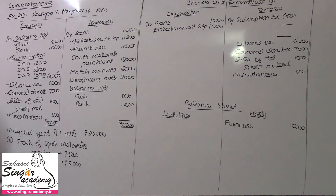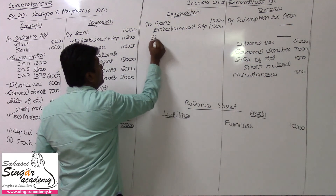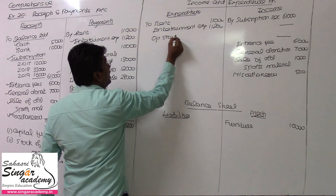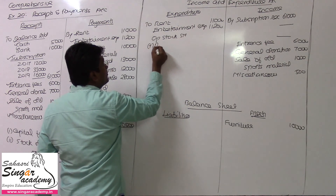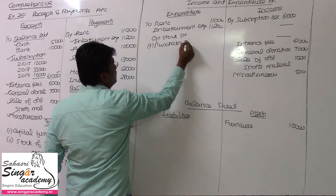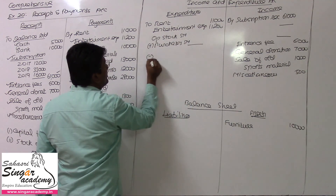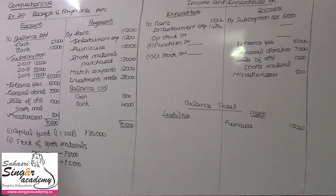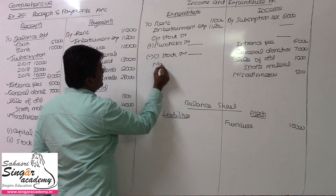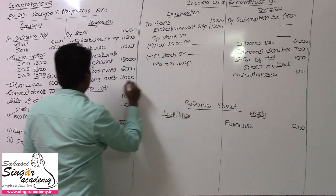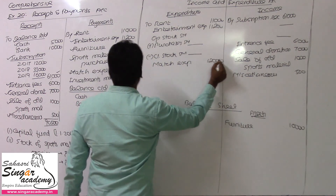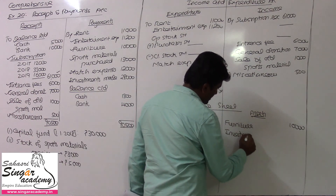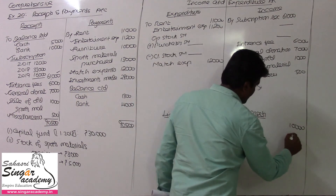Sports material purchase — stock of sports material, we will post that here. Sports material. Match expenses, value being 12,000. Investment made — this is an asset, so it will come on the asset side. Investments made, value being 28,000.